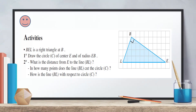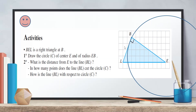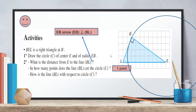Let's see this activity. BEL is a right triangle at B. If we draw a circle of center E and radius EB, what is the distance from E to line BL? The distance from E to line BL is the segment perpendicular from E to BL, which is BE. The line BL cuts the circle at one point B. Since line BL is perpendicular to EB, which is the radius at the point of tangency, LB is tangent to the circle.